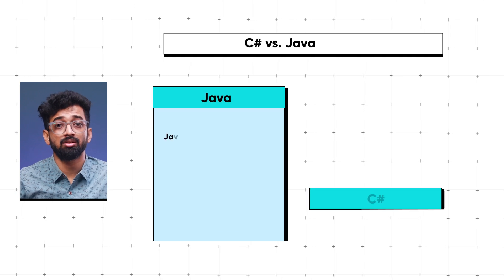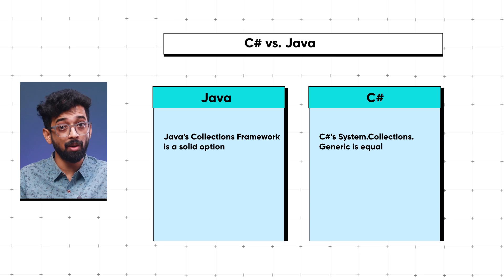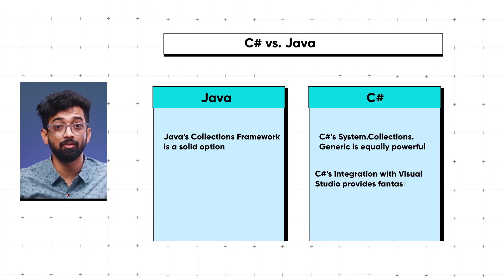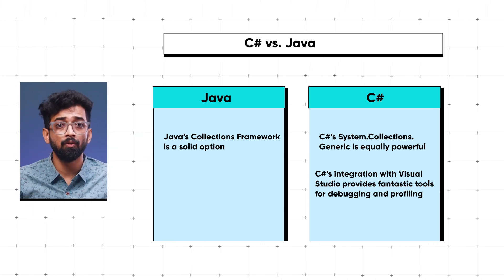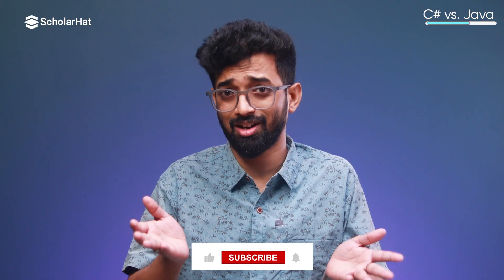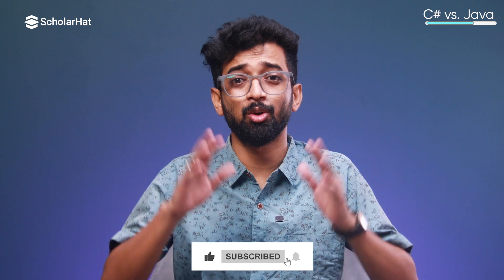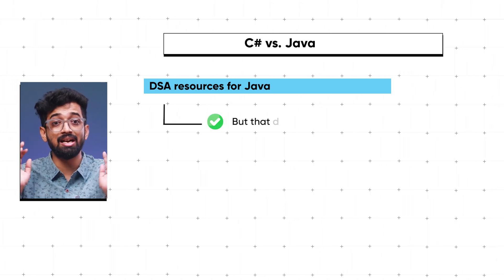Now let's pit C# against Java in the DSA arena. Both languages are high-level and have robust object-oriented programming capabilities, but they come with their own quirks. Java's Collections Framework is a solid option, but C#'s System.Collections.Generic is equally powerful. Plus, C#'s integration with Visual Studio provides fantastic tools for debugging and profiling, which can make learning and applying DSA a smoother experience. So if you are a .NET developer, you are not missing out — you are actually in a pretty good spot.